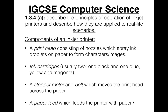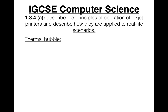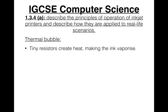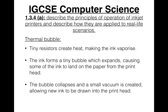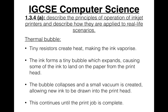There are two technologies used in inkjet printers. The first is thermal bubble: tiny resistors create heat, making the ink vaporize. The ink forms a tiny bubble which expands, causing some of the ink to land on the paper from the printhead. The bubble then collapses and a small vacuum is created, allowing new ink to be drawn into the printhead. This continues until the print job is complete.